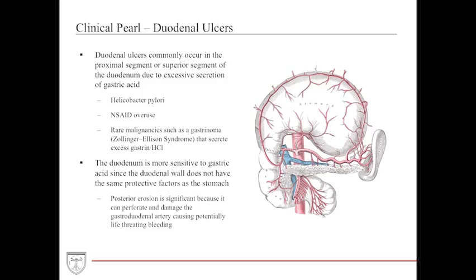Duodenal ulcers commonly occur in the proximal or superior segment of the duodenum due to excessive gastric acid secretion — from H. pylori infection, extreme NSAID abuse, or rare conditions like gastrinoma or Zollinger-Ellison syndrome, which secretes excess gastrin and resultantly excess hydrochloric acid. The duodenum lacks the same protective factors as the stomach, making it vulnerable. Posterior erosions are particularly dangerous as they can perforate the gastroduodenal artery, potentially causing a life-threatening bleed.